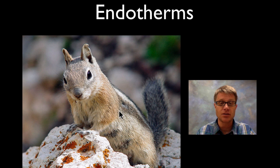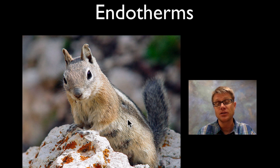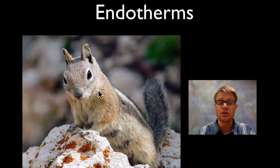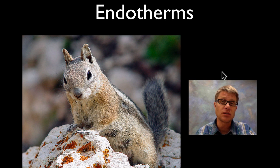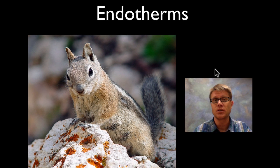If you're an endotherm, like this ground squirrel right here, you don't have to worry about that because you're generating heat inside you — you have metabolism going. The temperature of this ground squirrel is probably close to ours, whether it's cold out or really warm out, it stays close to ours as well. The advantage of being an endotherm is that your internal temperature is always going to be exactly the same. The disadvantage is that you have to constantly eat over and over again.